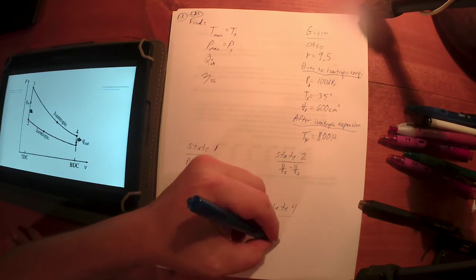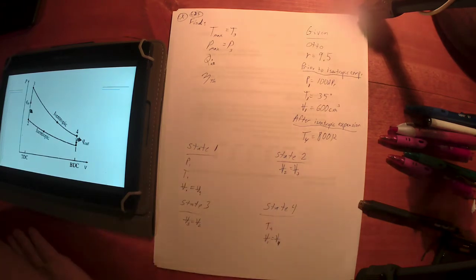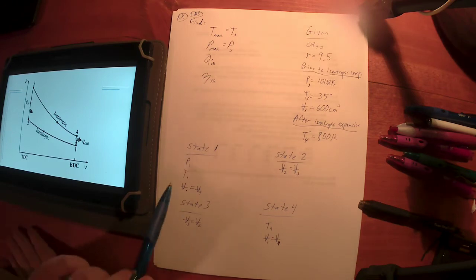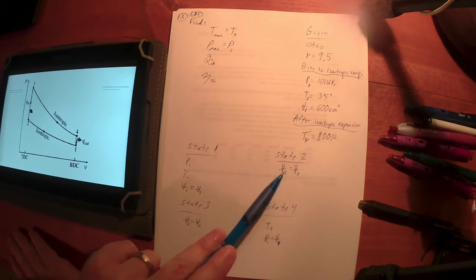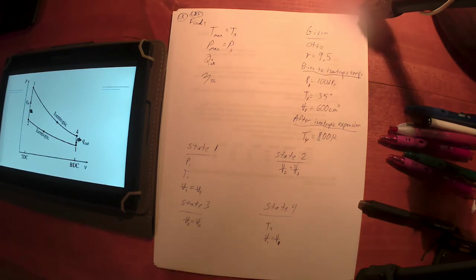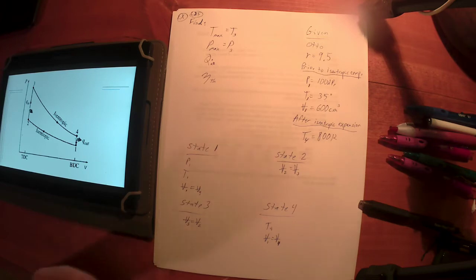I haven't been given a number for V2 and V3, but I can find them. Pause here and figure out how — for an Otto cycle, knowing one volume, how can I find the other volume?